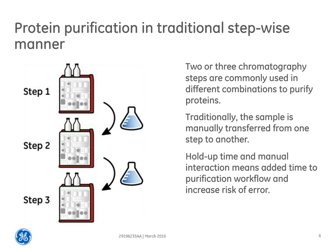Development of pharmaceutical products needs intensification in all steps. Efficient and robust ways of working can help shorten the total development time and generate high quality products. This is true for both research and pilot scale, and today we will focus on the research part. Traditionally, a purification process includes two or three chromatography steps, which are used in different combinations to purify a protein. As illustrated in the picture, the eluate from one step is collected into fractions and then manually transferred on to the next step. These manual interactions add time to the overall purification process, as well as increase the risk of errors.